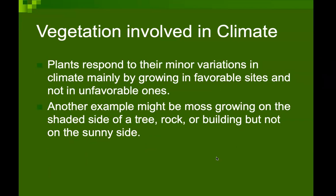Vegetation is involved in the climate. Plants respond to minor variations in climate mainly by growing in favorable sites and not in unfavorable ones. Another example might be moss growing on the shaded side of trees, rocks, or buildings but not on the sunny side — this also leads to some impact on the microclimate of the area.